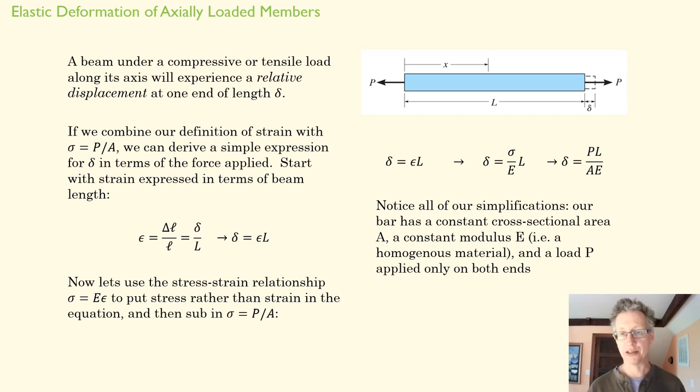That gets us to this expression here, delta equals epsilon times L. Now, we can use this stress-strain relationship to replace strain here in that relationship. And then we're going to replace stress with P over A. So, we get delta equals epsilon L. We then replace epsilon to get delta equals stress over the modulus of elasticity times L. And then we replace stress with P over A. And we get the delta, that is the deformation, the change in length here,